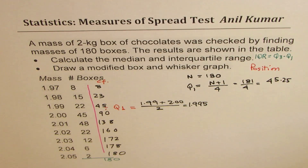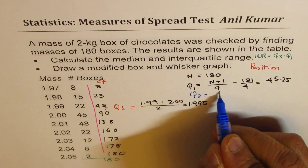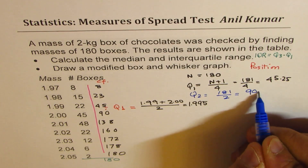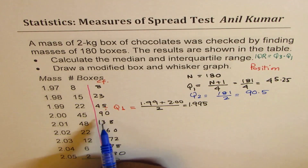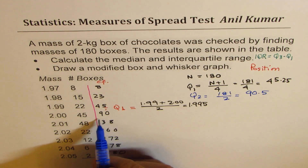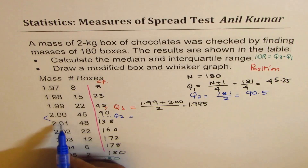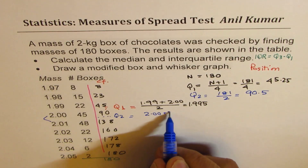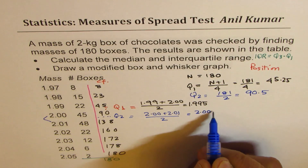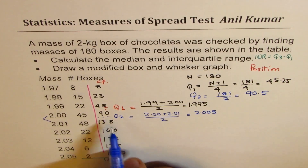Now for Q2: Q2 will be N+1 divided by 2 = 181 divided by 2 = 90.5. Position 90.5 falls between the 90th and 91st elements. Looking at the cumulative frequency, that is between these two values. Q2 = 2.00 plus 2.01 divided by 2 = 2.005. So Q2 = 2.005.